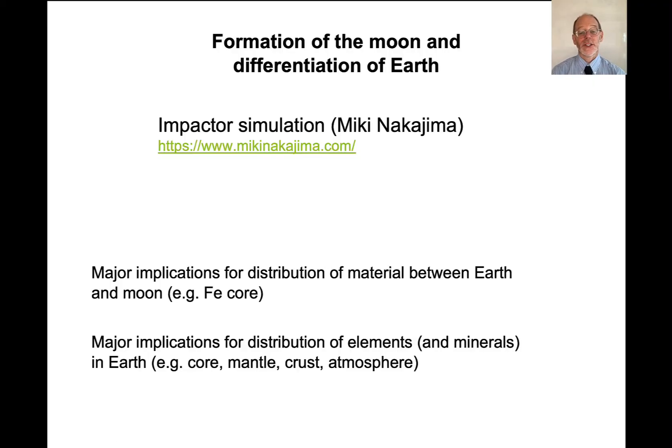And so what does this mean? Well, this has major implications for the distribution of material between the Earth and the Moon. So for example, we have an iron core and most of that core is in the Earth. It's not in the Moon. It also has major implications for the distribution of the elements and consequently minerals in the Earth.